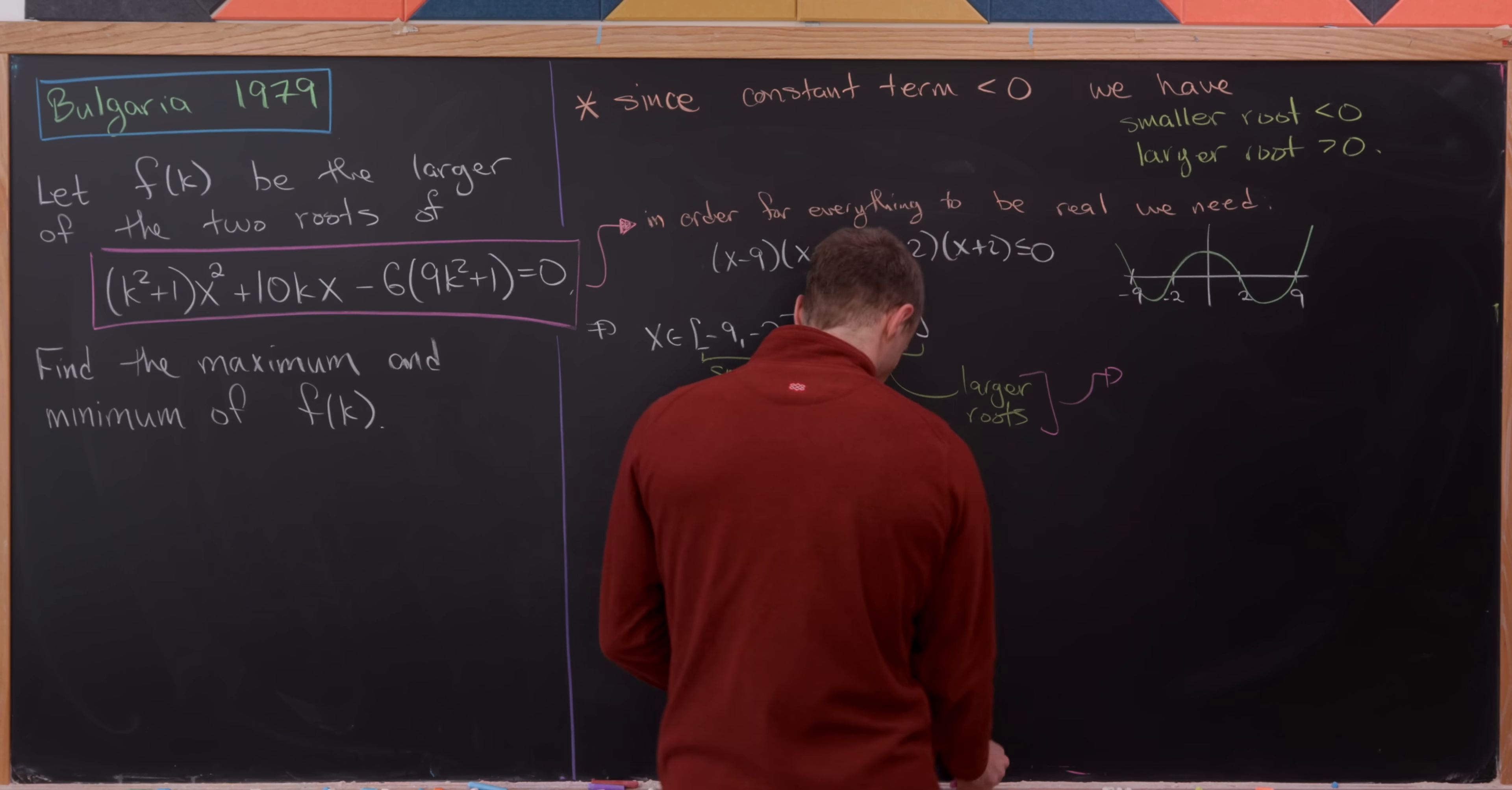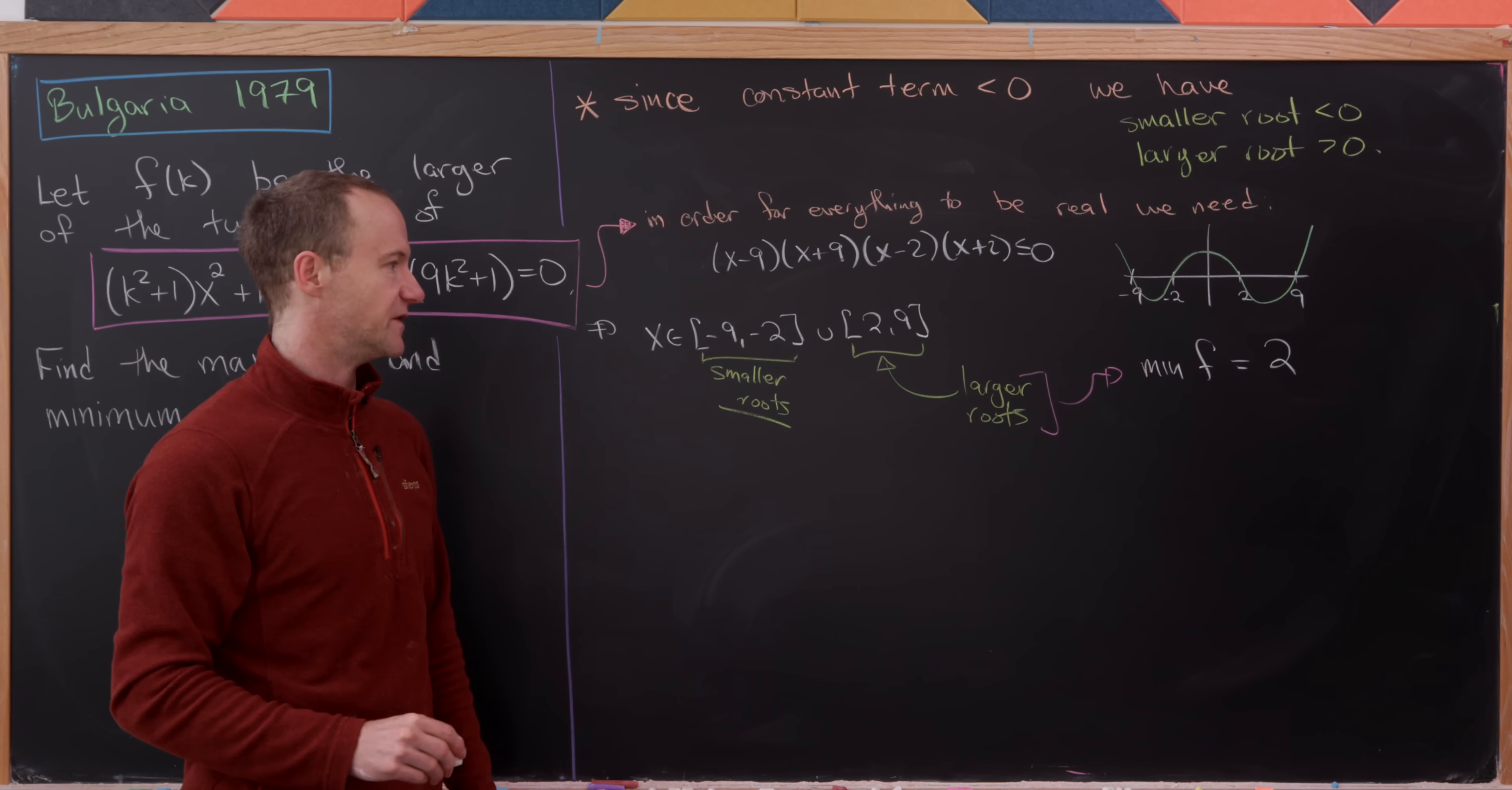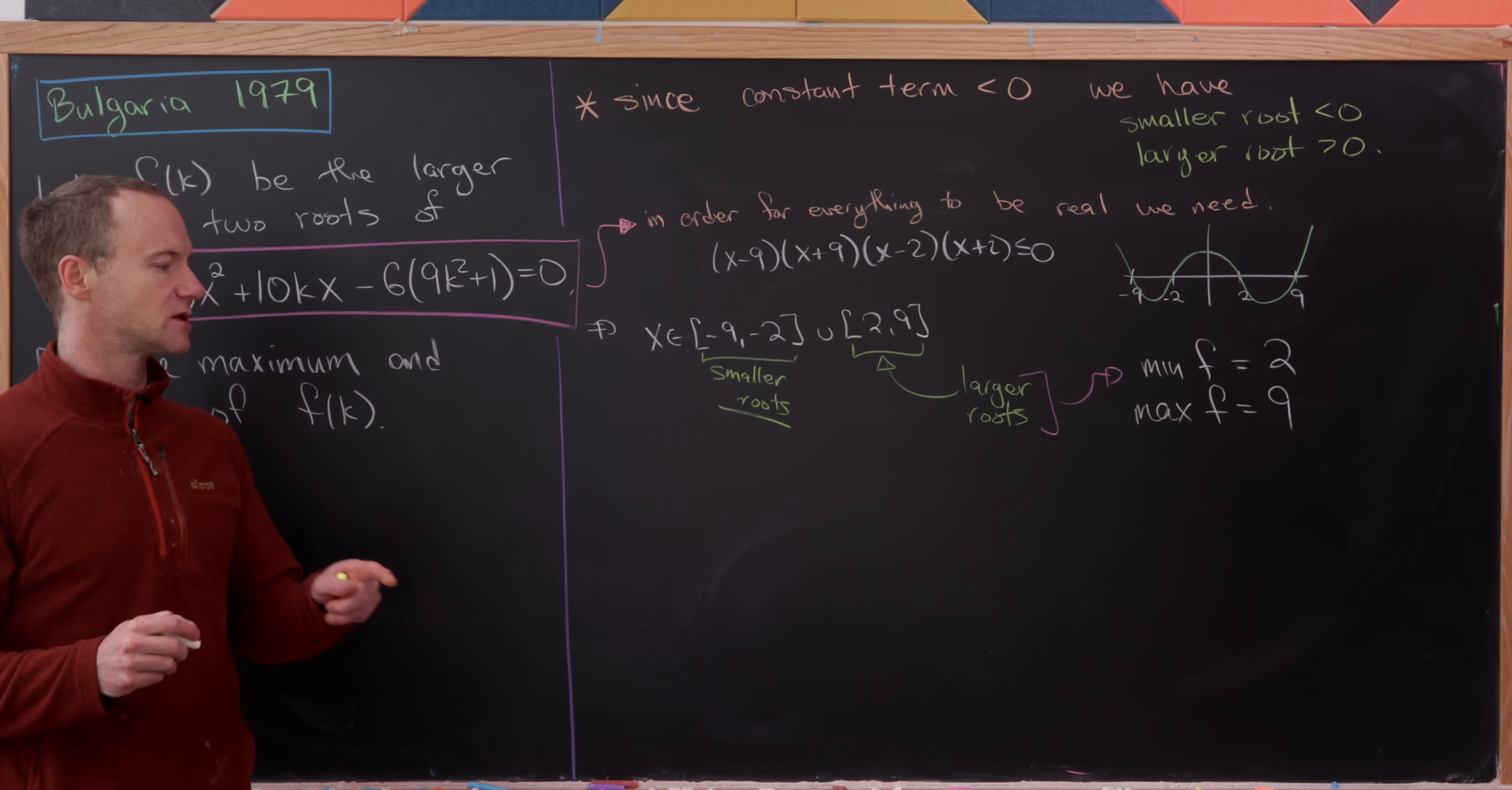We can see that the minimum possible value of f is 2, because f takes the larger root of this polynomial equation. The maximum possible value of f is 9. That's enough to have this all sorted out.